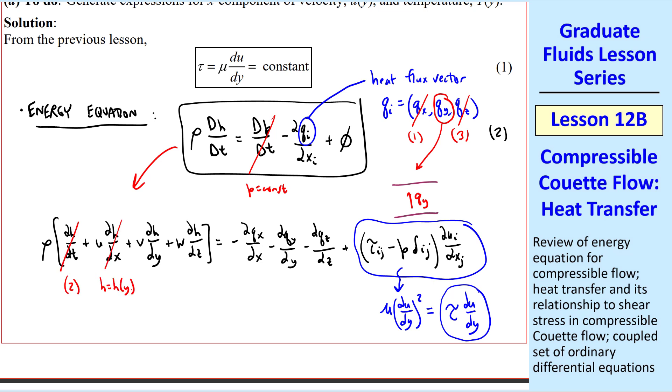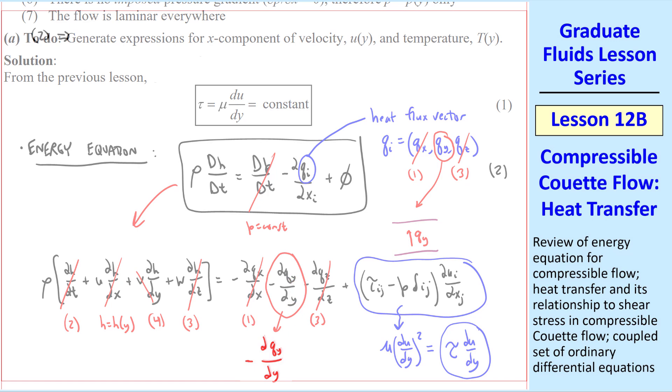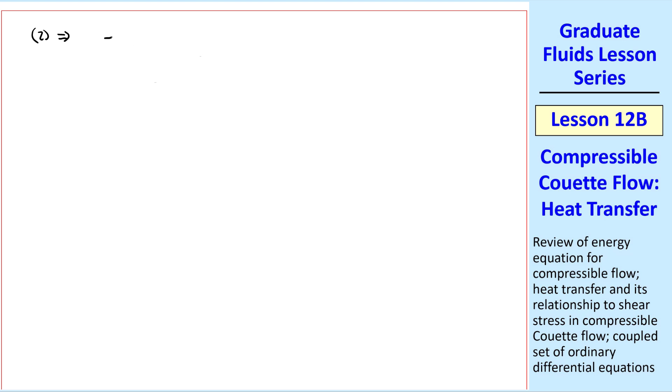Most of these other terms go away by our numbered approximations and assumptions. Steady. All variables are a function of y only. V is 0. It's 2d. Nothing varies with x. Nothing varies with z. And so this term and this term are the only two that remain. We can write this one as dqy dy, since qy itself is a function only of y. Thus equation 2 simplifies to negative dqy dy plus tau du dy equals 0, which I'll call equation 3.